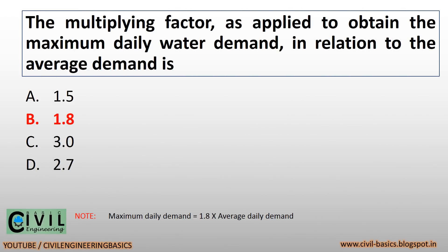The multiplying factor as applied to obtain the maximum daily water demand in relation to the average demand is 1.8. Note: maximum daily demand equals 1.8 times average daily demand.